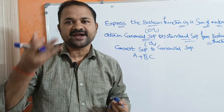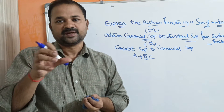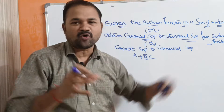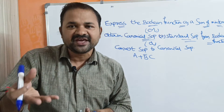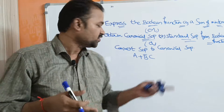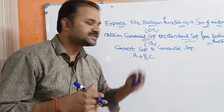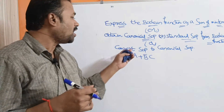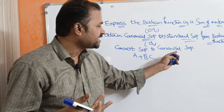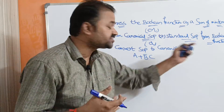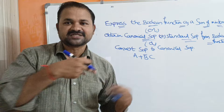Canonical SOP or standard SOP means each minterm contains a sum of minterms, and each minterm should contain all the variables or literals. We know that in the first term, b and c are missing, and in the second term, a is missing. This function is in the form of SOP — sum of products — so we need to convert it into canonical SOP.